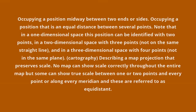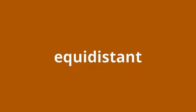Cartography: describing a map projection that preserves scale. No map can show scale correctly throughout the entire map, but some can show true scale between one or two points and every point, or along every meridian, and these are referred to as equidistant.